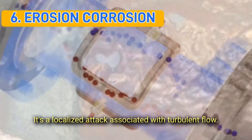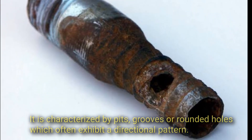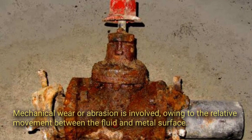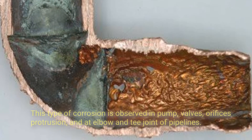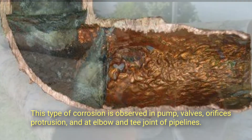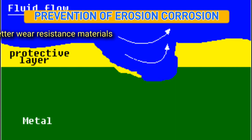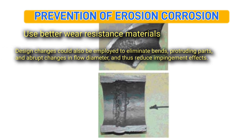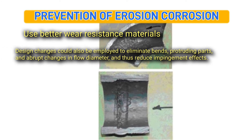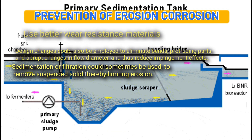Six, erosion corrosion: it is a localized attack associated with turbulent flow, characterized by pits, grooves, or rounded holes which often exhibit a directional pattern. Mechanical wear or abrasion is involved due to relative movement between the fluid and metal surface. It is observed in pumps, valves, orifices, protrusions, and at elbows and T-joints of pipelines. Prevention includes using better wear-resistance materials, design changes to eliminate bends and abrupt changes in flow diameter, and sedimentation or filtration to remove suspended solids.